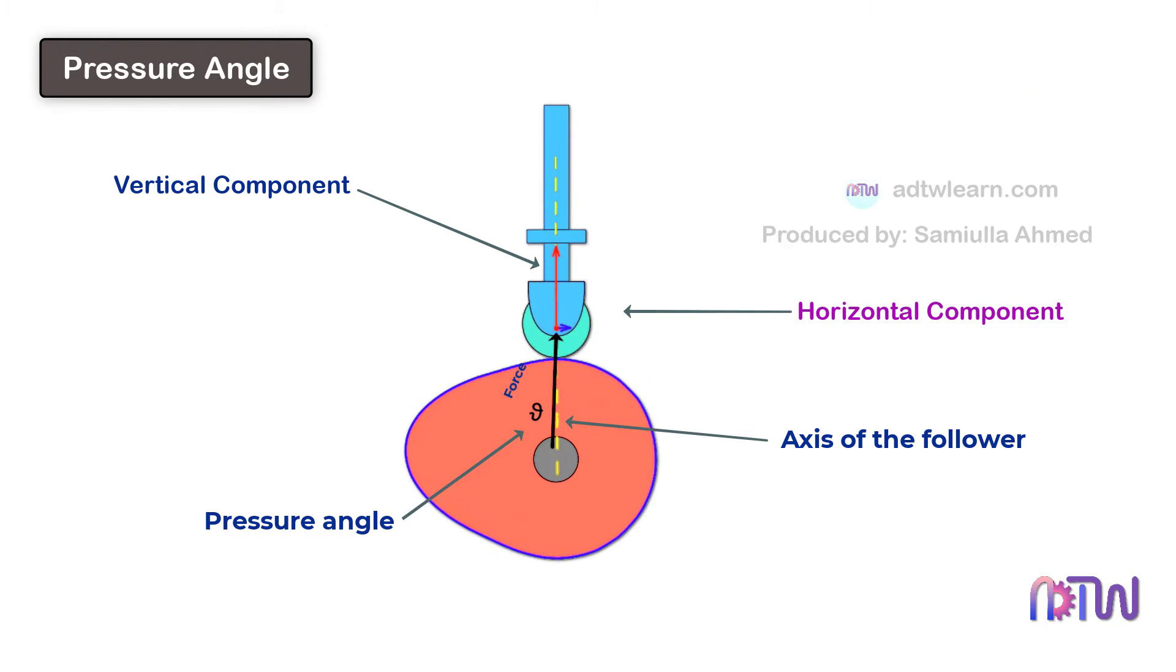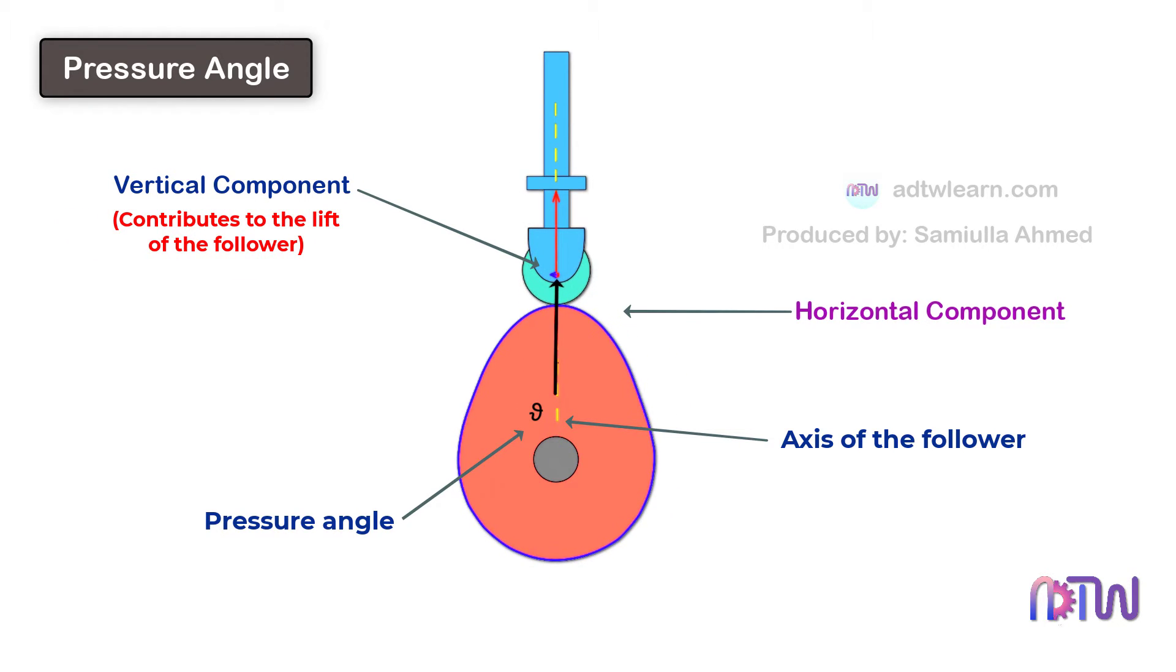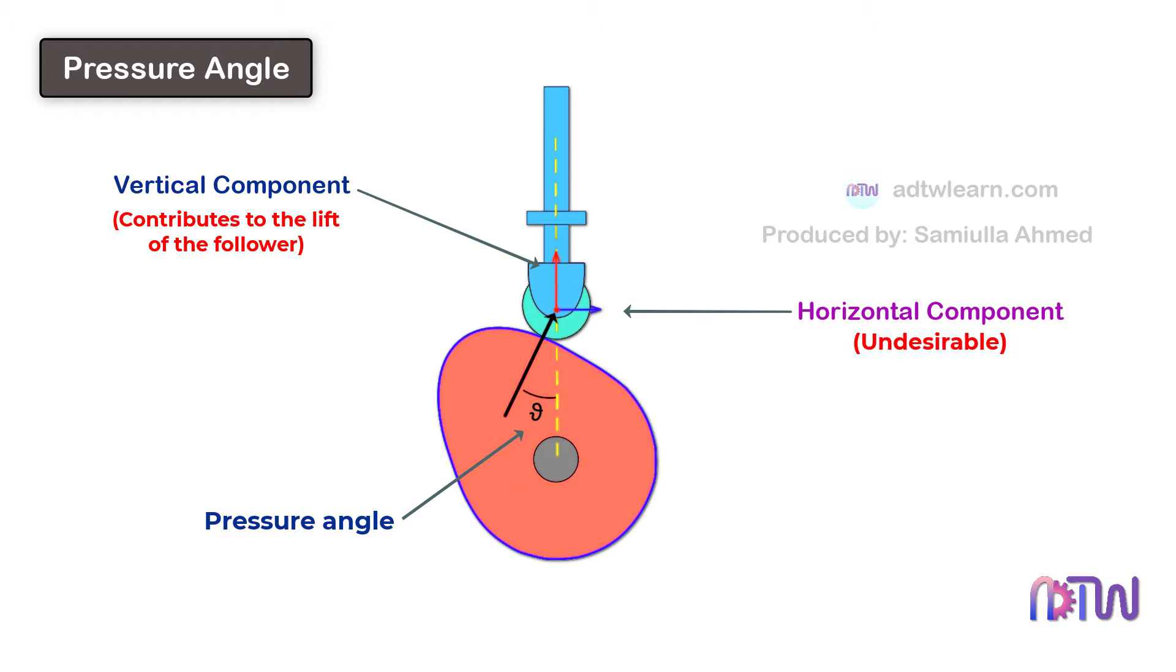The magnitude of these components is varying during the operation. Here, only the vertical component contributes to the lift of the follower whereas the horizontal component is undesirable. Therefore very large pressure angle is not desirable as it increases the horizontal component and can jam the follower in its bearing. For the smooth movement of the follower, the pressure angle should be less than the allowable value.